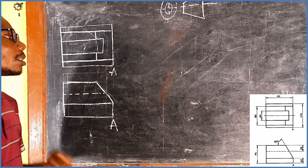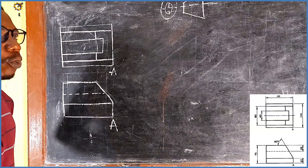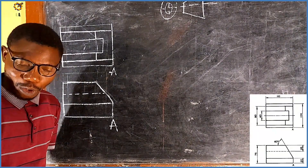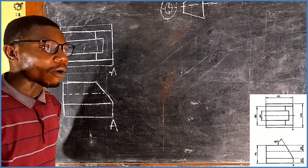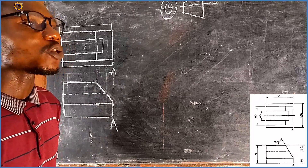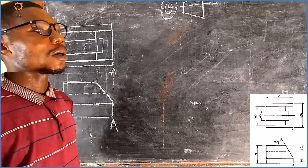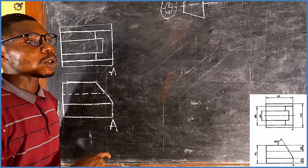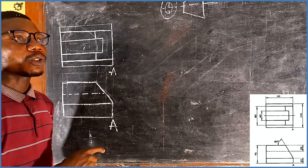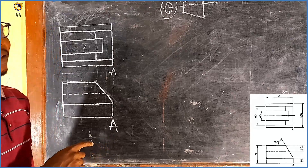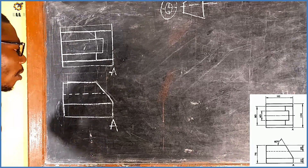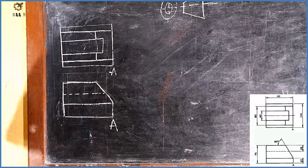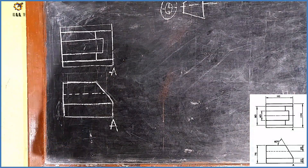Today we will be considering this problem as displayed on the screen, which is the continuation of the series — conversion from orthographic projection to isometric projection. Today we continue this series and this is going to be problem number 9, part 9 of series 9. It is in our third angle orthographic projection.